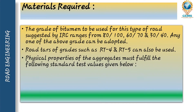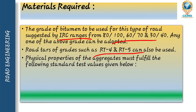Next is materials required. The grade of bitumen to be used for this type of road is suggested by the Indian Road Congress (IRC), ranging from 80/100, 60/70, and 30/40. Any one of the above grades can be adopted. Road tar of grade RT4 and RT5 can also be used. Physical properties of the aggregate must be fulfilled; the material required must satisfy the following standard test values. These are the bitumens which can be used in road paving, but their physical properties should fulfill the requirement of standard test values.